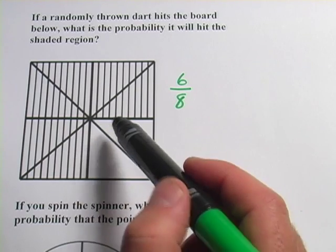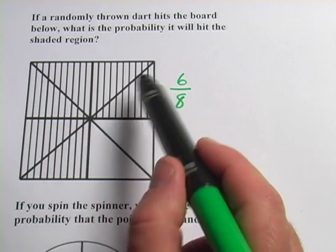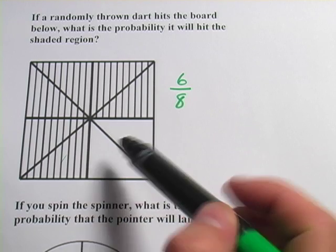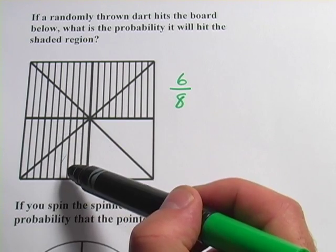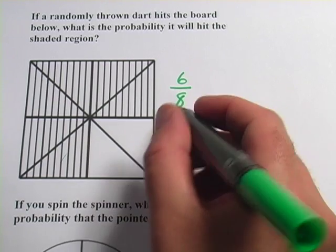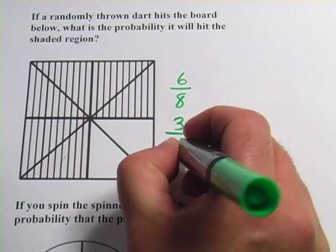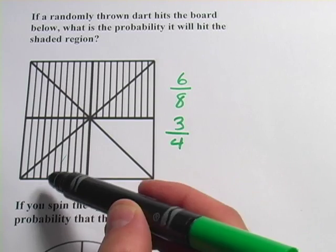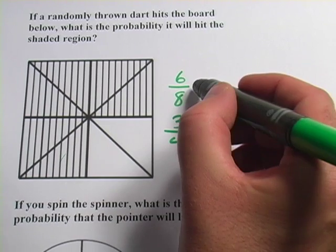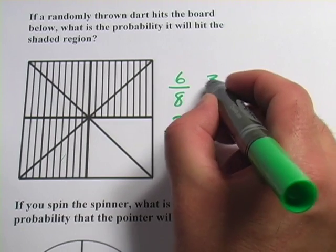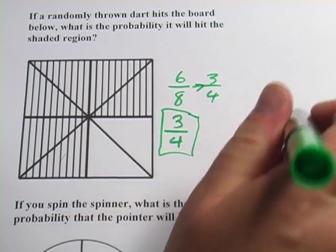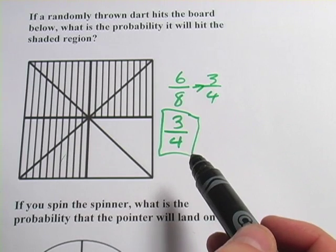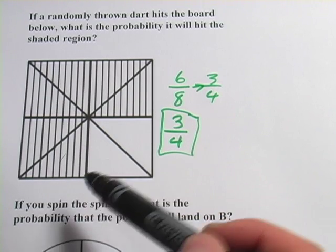Before I do that though, I'm going to look at just these boxes and ignore the diagonal lines, because I can kind of see we've got 1, 2, 3, 4 boxes. And 3 boxes are shaded in, so it would be a 3 out of 4 chance that a dart would hit the shaded area. And actually if you reduce 6 over 8, it becomes 3 out of 4. So that's our answer. There's a 3 out of 4 chance that a randomly thrown dart is going to hit the shaded area.